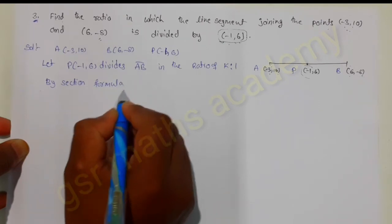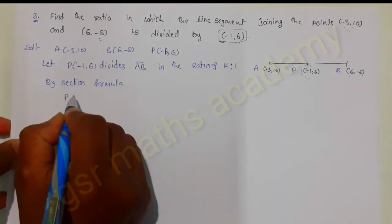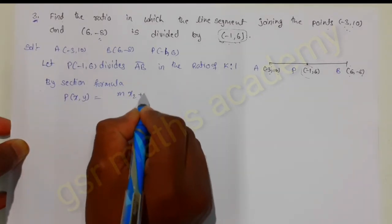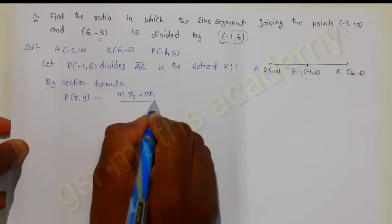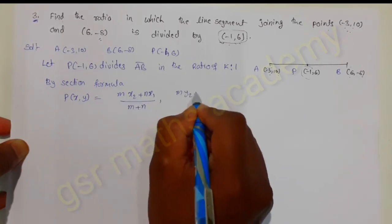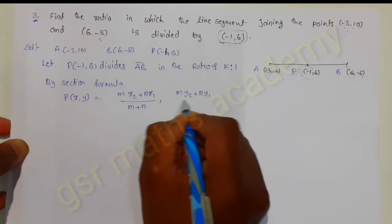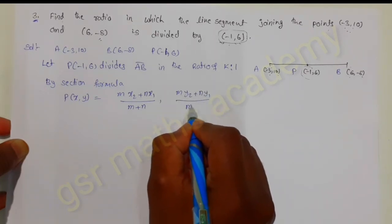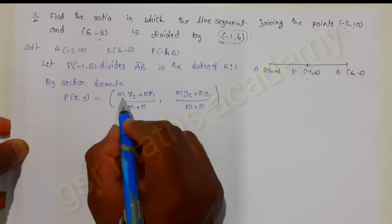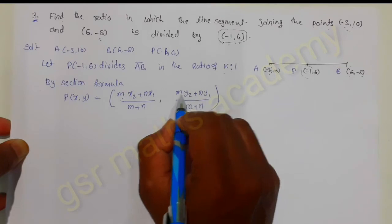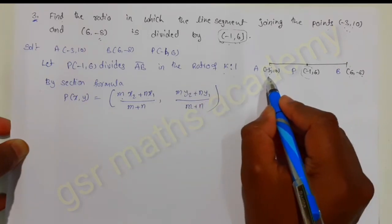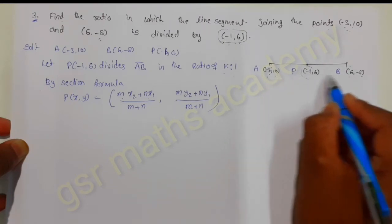By using the section formula, we get the coordinates of point P as x comma y, which will be obtained by: m times x2 plus n times x1 divided by m plus n, and m times y2 plus n times y1 divided by m plus n. This is the section formula. Here m equals k and n equals 1.